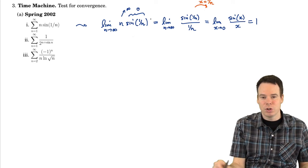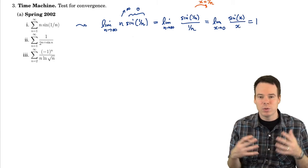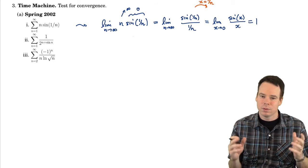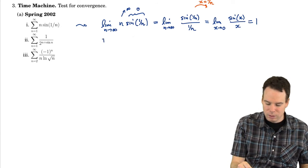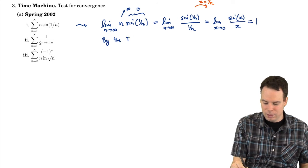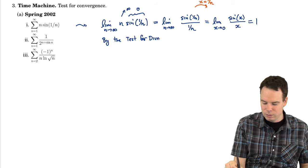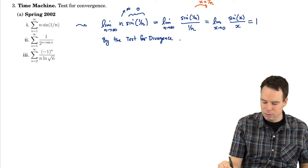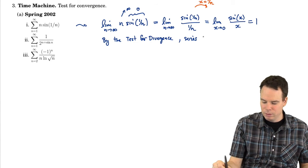You can get this if you want by using L'Hôpital's rule or you can just remember that this was a really important limit we had in differential calculus. So its value is 1. So what does this mean? It means the terms go to 1. The terms do not go to 0. So the series must diverge. So by the test for divergence the series diverges.